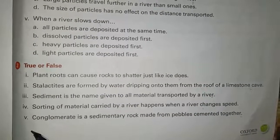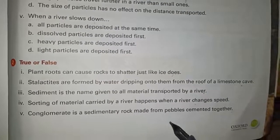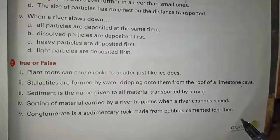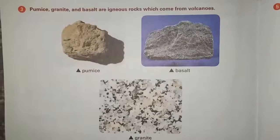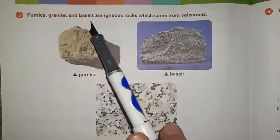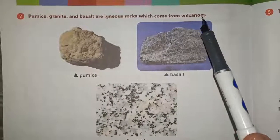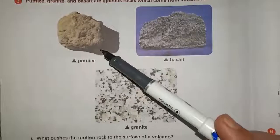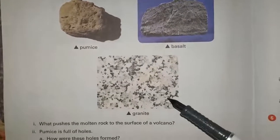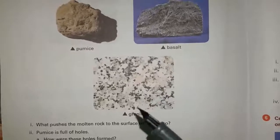Statement number 5: conglomerate is a sedimentary rock made from pebbles cemented together. This is also a true statement. Question number 3: pumice, granite and basalt are igneous rocks which come from volcanoes. We have pumice, basalt and granite and we have to answer the questions.